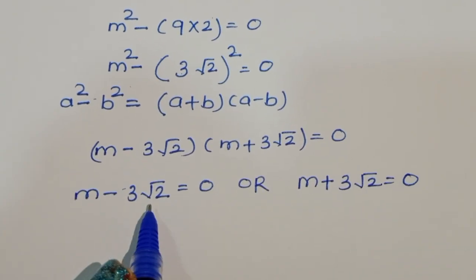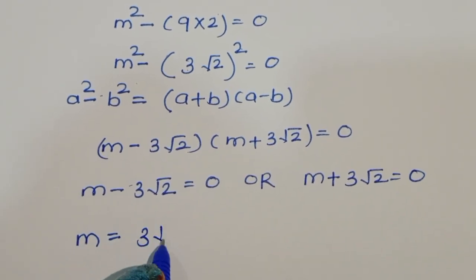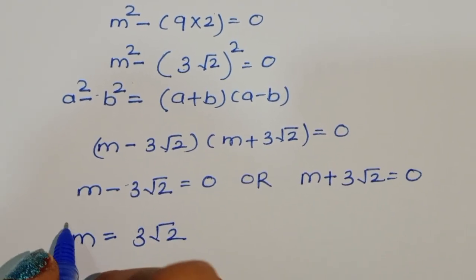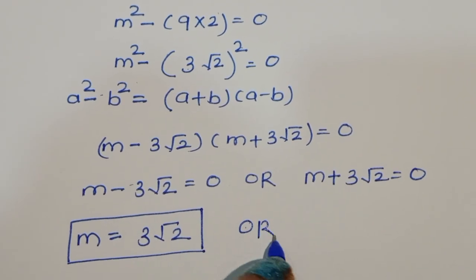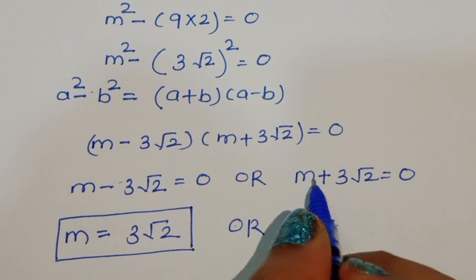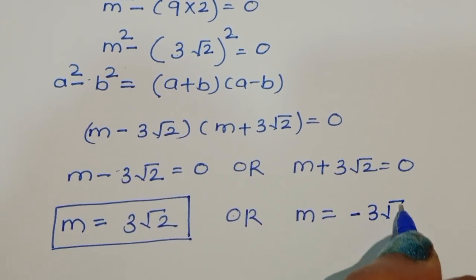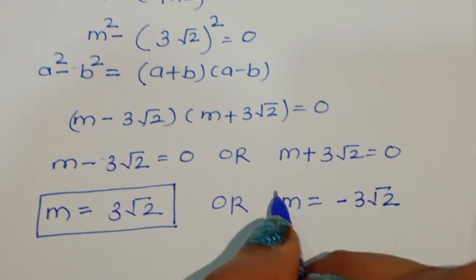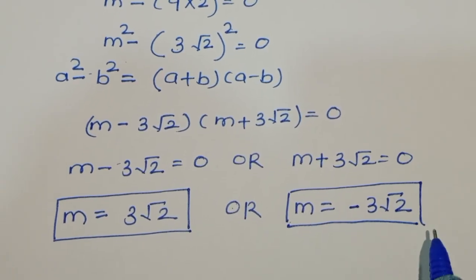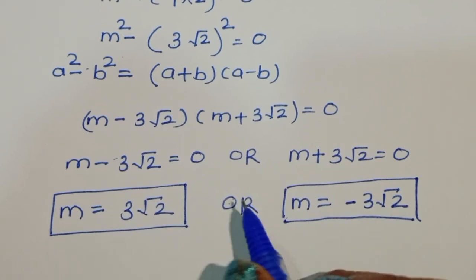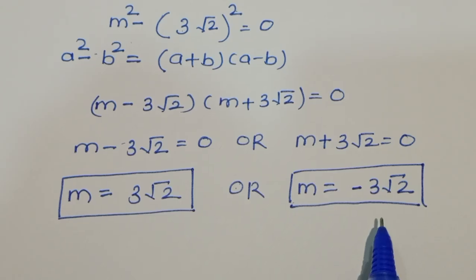From the first equation, m is equal to positive 3√2. From the second equation, m is equal to negative 3√2. So we got two values of m: one positive and one negative.